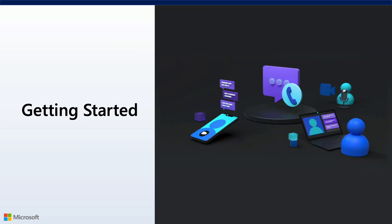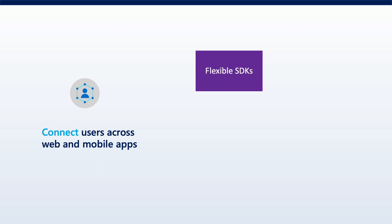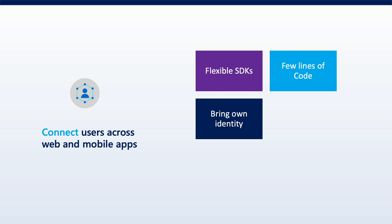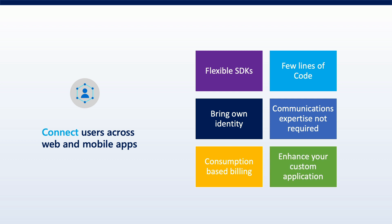Now that we've talked about the different scenarios and gone through the core services, let's wrap up by talking about how you can get started using Azure Communication Services in your app. You can connect your users into your custom apps using flexible SDKs provided by Azure Communication Services. These SDKs require just a few lines of code in many cases to get the functionality integrated. You can bring your own identity when it comes to security, and communications expertise isn't required — setting up telephony, audio video, WebRTC and other features is handled by the SDKs. Everything is consumption-based billing, so you're only paying for the services you actually use.